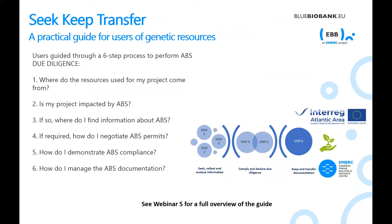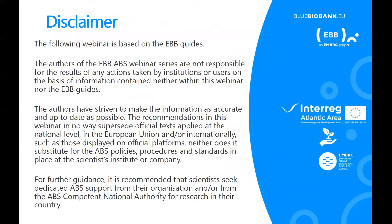Seek, Keep and Transfer is a practical guide for users of genetic resources. Users are guided through a six-step process to perform ABS due diligence, and Webinar 5 provides a full overview of this guide. The following webinars have been developed as introductory guides based on the EBB handbook and step-by-step guide. While the authors have aimed to make the information as accurate and up-to-date as possible, ABS is complex and evolving. The authors are not responsible for the results of any actions taken by institutions or users. Further specific information and support is available, and it is recommended that dedicated ABS support is sought from the home organisation or the ABS competent national authority for research in your country.